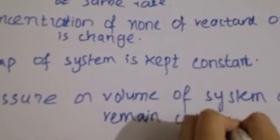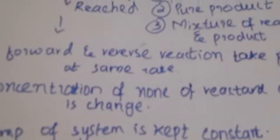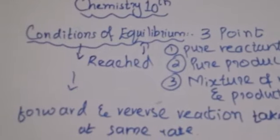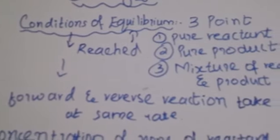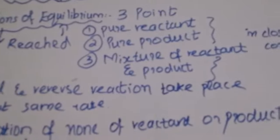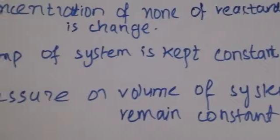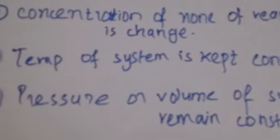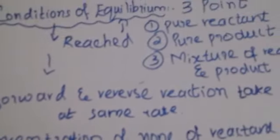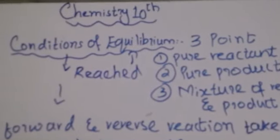When we have a reaction starting and we do not change the concentration, temperature, pressure, or volume, we do not change the rate. When we don't change the rate, the reaction proceeds at the same rate. So when we have the same rate, the system exists in an equilibrium state. This was our condition of equilibrium.